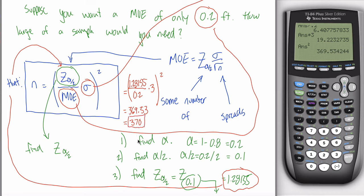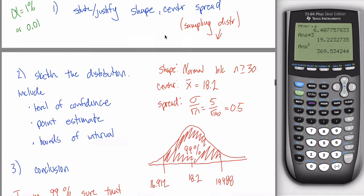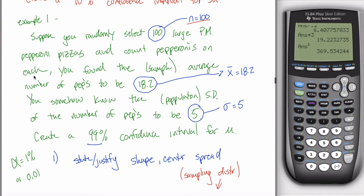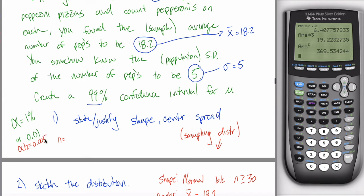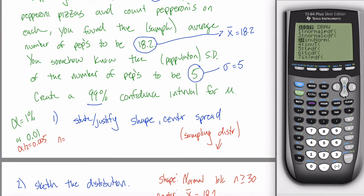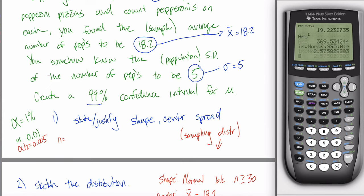Let's do the same thing much quicker for a second example. I need to find n. I'd give you the formula: n equals Z sub (α/2) over MOE times sigma, all squared. Alpha is 1%, so alpha divided by 2 is half of 1%, or 0.005. The area to the right of the point I'm looking for is 0.005, so the area to the left is 0.995.